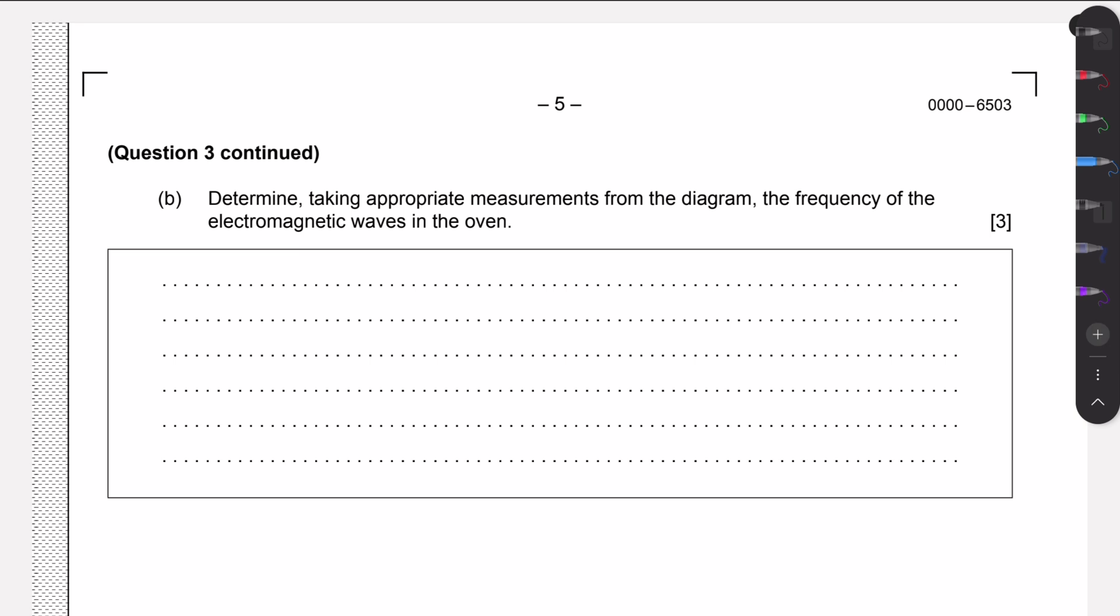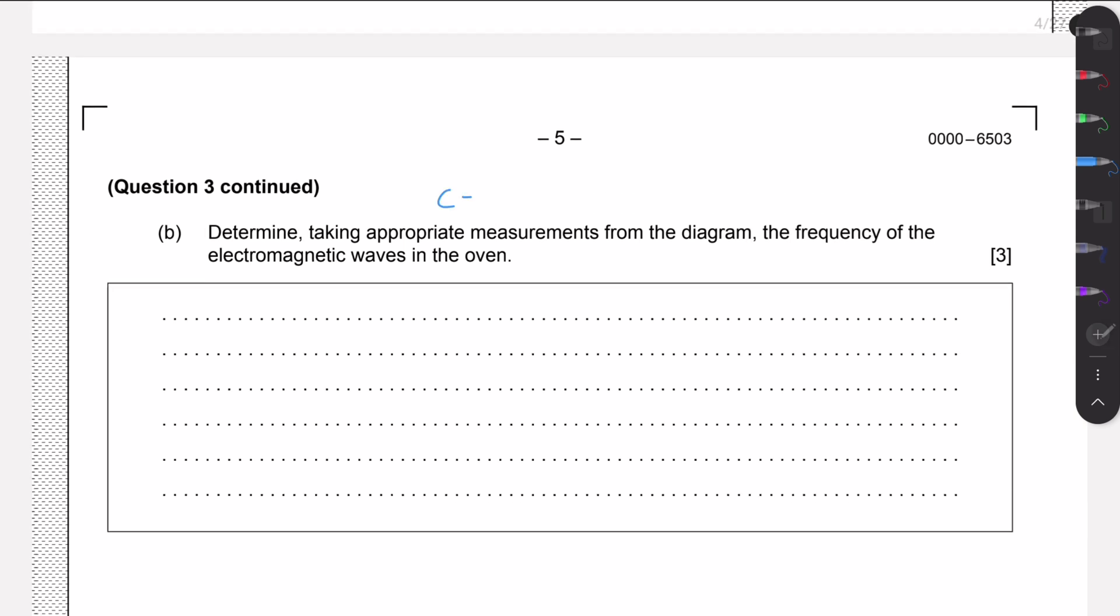Then we need to determine, taking appropriate measurements from the diagram, we need to calculate the frequency of the electromagnetic waves. The formula we know is that c equals lambda times f, and this frequency is what we need to calculate.